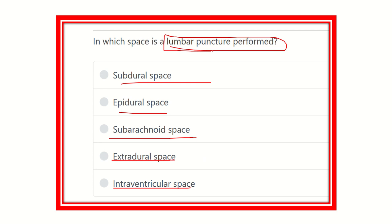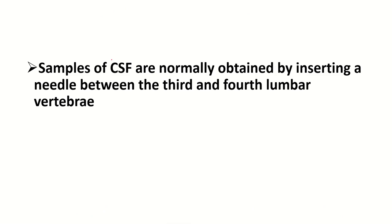We have to find out in which of the following spaces CSF is located within the spinal canal. A sample of CSF is normally obtained by inserting a needle between the third and fourth lumbar vertebra, or fourth and fifth lumbar vertebra. To avoid injury to the spinal cord, it is usually done at L3-L4, but can be done between L4-L5, L1-L2, or L2-L3.